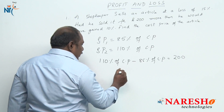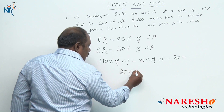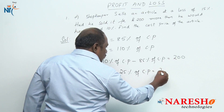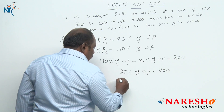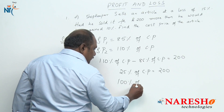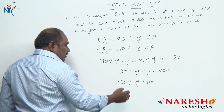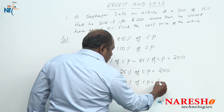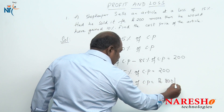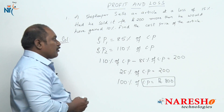So 110 minus 85 is 25 percent. Thus 25 percent of cost price is 200 rupees. What is 100 percent of cost price? Cross multiplying, we get the answer as 800 rupees. So the cost price of the article is 800 rupees.